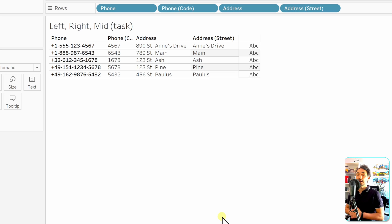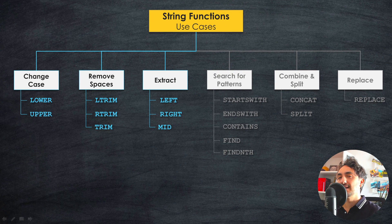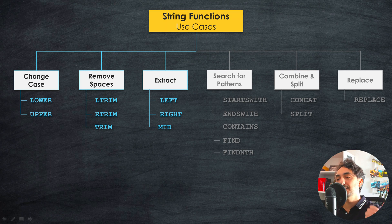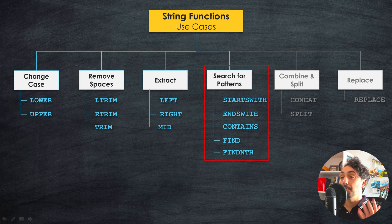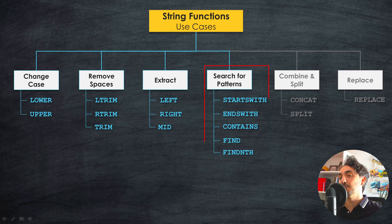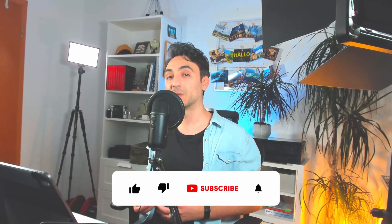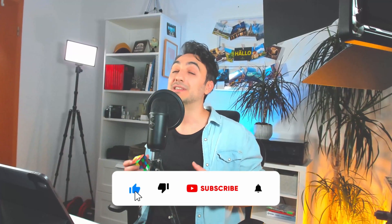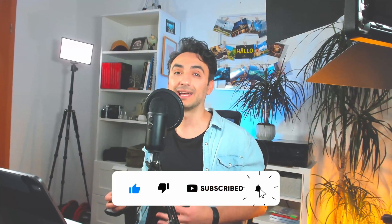That's all about this use case — how to extract specific substrings from text using the three functions LEFT, RIGHT, and MID. Next, we'll start talking about functions for searching specific patterns in Tableau. If you like this content and want to support the channel, please like and comment — it really helps the YouTube algorithm. Thank you for watching, and see you in the next video.